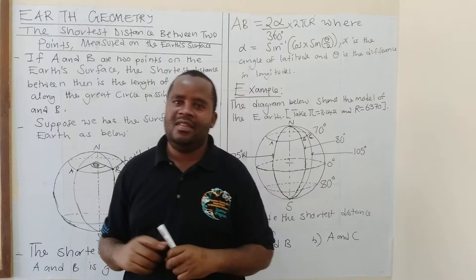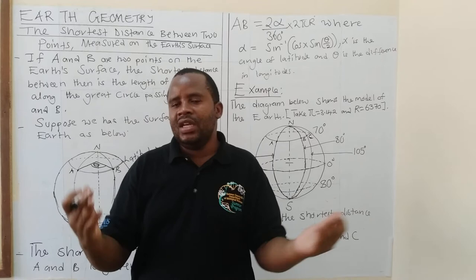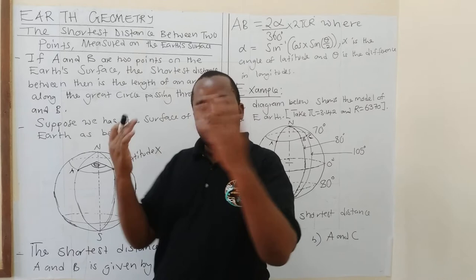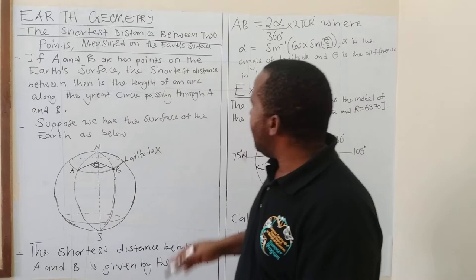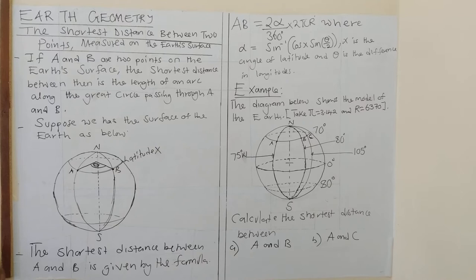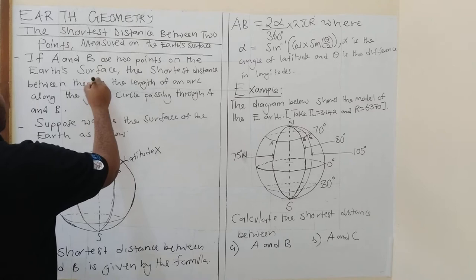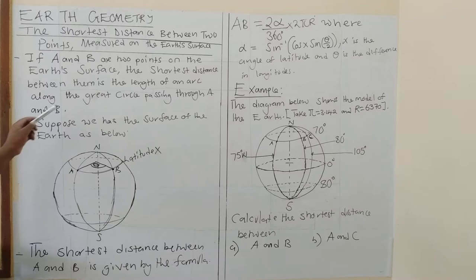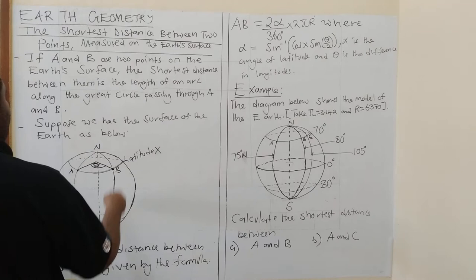So if you have been having challenges, maybe a teacher could be looking for reference materials, this video is there to help you. If you are just a student who has been wondering how to get the shortest distance, we are providing the platform now. If A and B are two points on the surface of the earth, the shortest distance between them is the length of an arc along the great circle passing through those points.